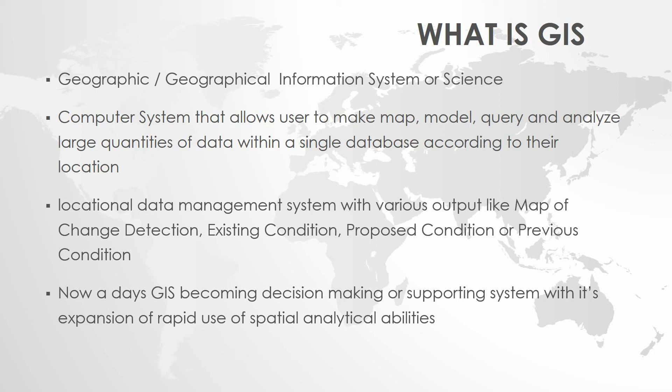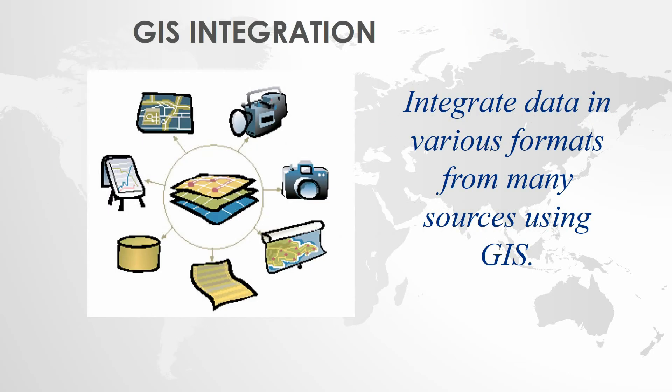GIS has integrated data in various formats from many sources. There are XML data, Excel data, SQL data, and CSV data. There are also tabular format data, descriptive data, and converted tabular data. These different formats can be integrated at a particular location within GIS, combining database systems and networking analysis systems.